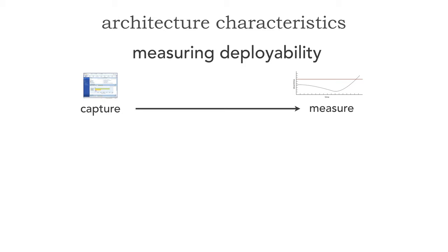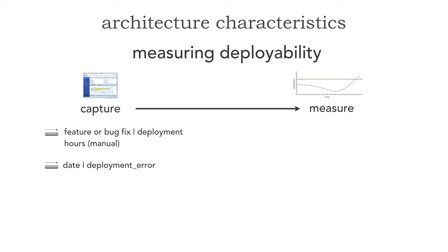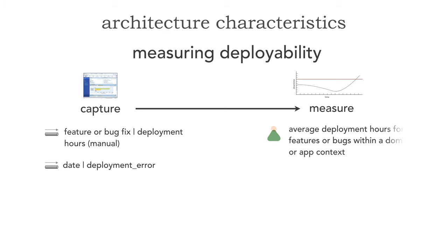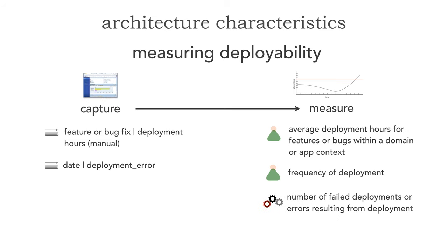When measuring deployability, there are things we capture and measure. What I can do — usually manually, although I can hook into something like Rally or Jira — is capture two things. The first is the feature or bug fix and how long it took for deployment in both calendar and hours, which measures the frequency. I also capture deployment risk: any deployment error, whether a failed deployment or one that broke something previously working. I can then measure the average deployment hours for features or bugs within a domain, tracking the number of failed deployments to measure all three dimensions of deployability.